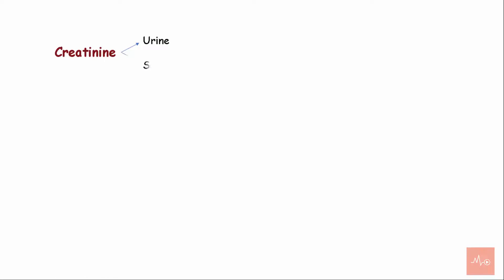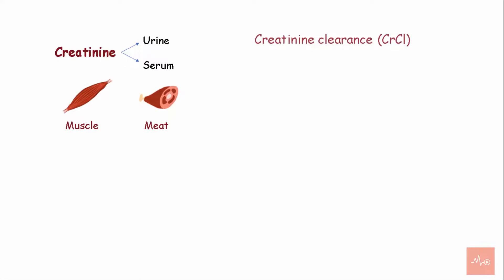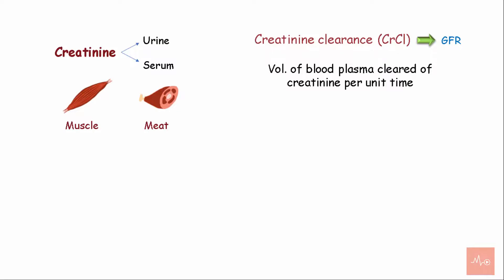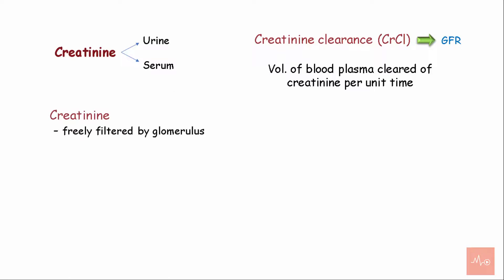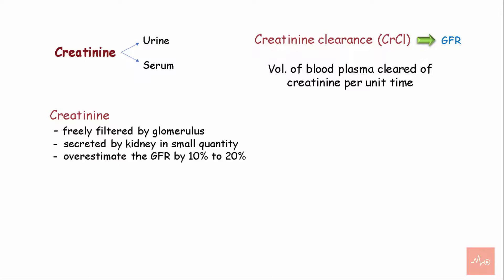Creatinine is a biomarker present in human serum and urine. It is a byproduct of muscle catabolism and is also obtained through meat intake. Creatinine clearance is used in the estimation of GFR — it is the volume of plasma cleared of creatinine per unit time. Creatinine is freely filtered by the glomerulus and secreted by the kidney in very small amounts, but can overestimate GFR by about 10–20%. The advantages are that the procedure is easier to perform and has a low cost.